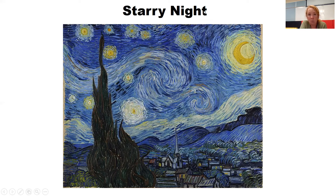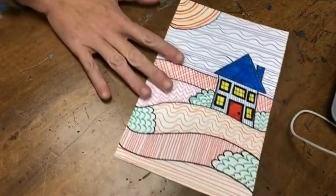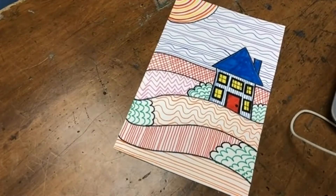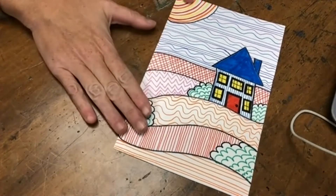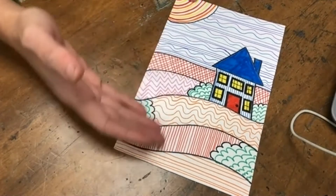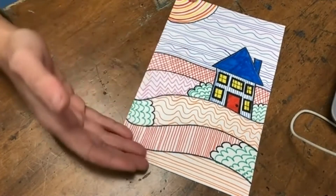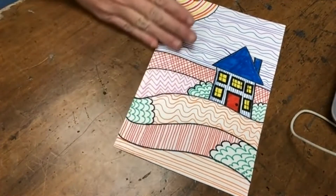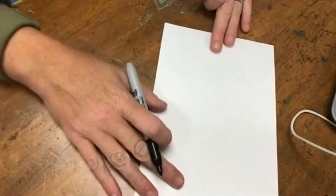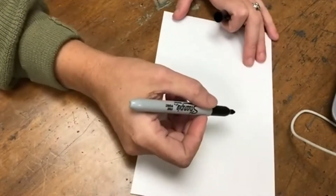That is something we worked on in our picture. I'm going to show you very quickly what we created today. We created a landscape picture similar in style to Starry Night, where we stacked different patterns and different exaggerated lines using this step idea to decorate our picture.